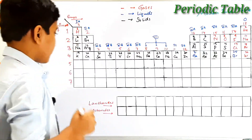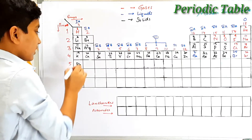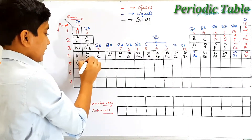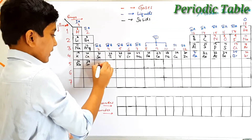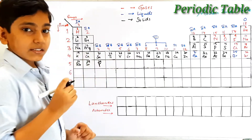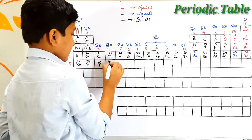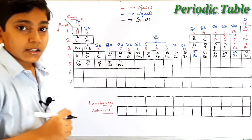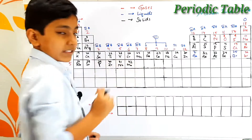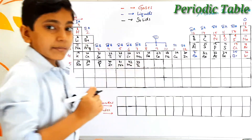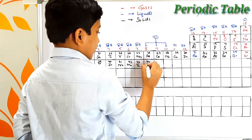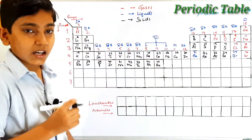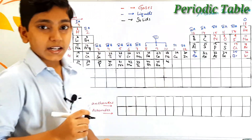The fifth period begins with rubidium — its symbol is Rb and its atomic number is 37. After that we find strontium — its symbol is Sr and its atomic number is 38. Then yttrium with atomic number 39 and symbol Y, zirconium with atomic number 40 — symbol Zr, niobium with atomic number 41 — symbol Nb, molybdenum with atomic number 42 — symbol Mo, technetium with atomic number 43 — symbol Tc, ruthenium with atomic number 44 — symbol Ru, rhodium with atomic number 45 — symbol Rh, and palladium with atomic number 46 — symbol Pd.